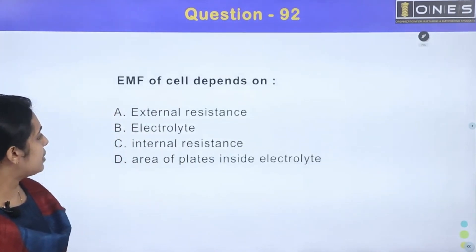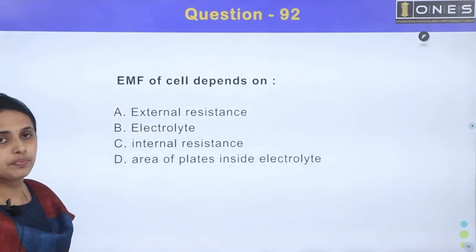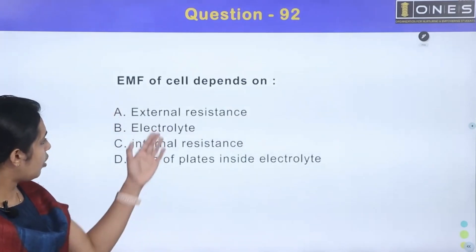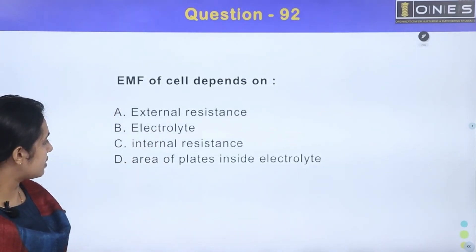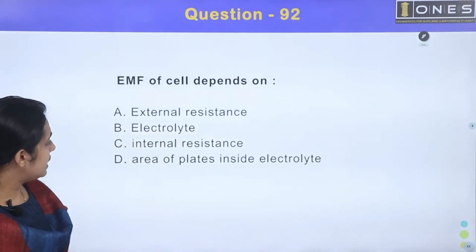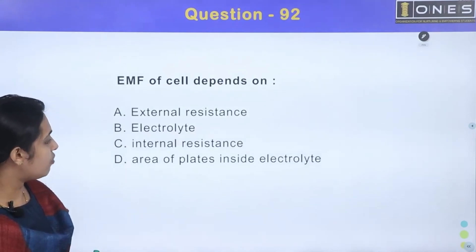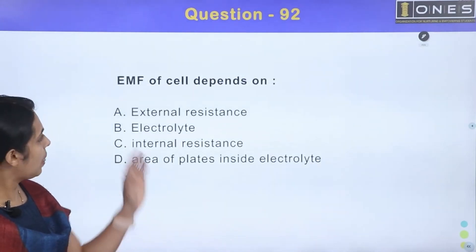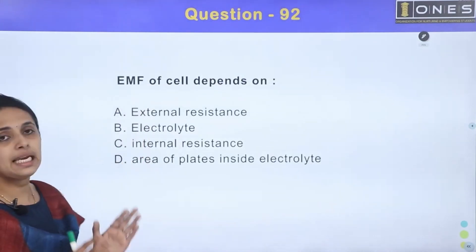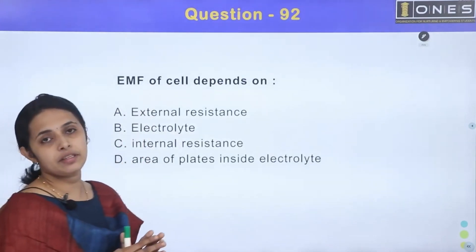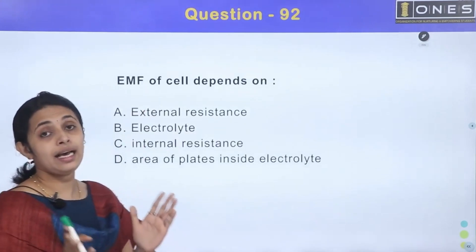EMF of a cell depends upon. The options are: external resistance, electrolyte, internal resistance, and area of plate inside the electrolyte. Now, what does EMF look like?